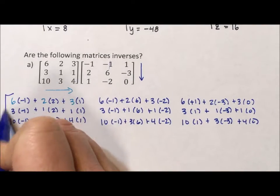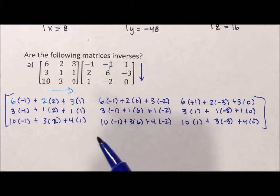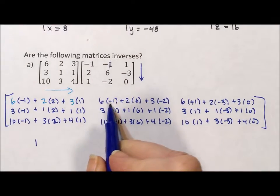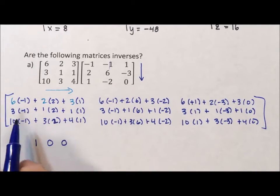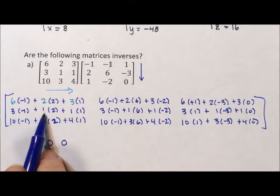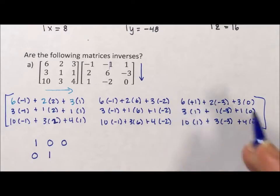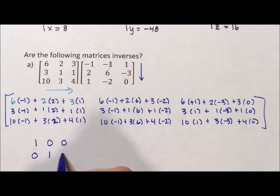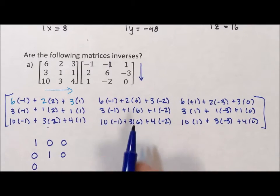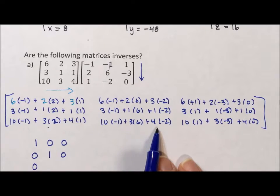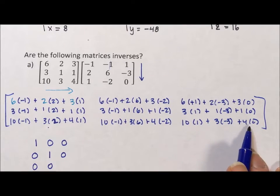Now if I do these calculations, I get 6 plus 4 plus 3, that's 1. Negative 6 plus 12 minus 6 is 0. 6 minus 6 plus 0 is 0. Negative 3 plus 2 plus 1 is 0. Negative 3 plus 6 minus 2 is 1. 3 minus 3 plus 0 is 0. Negative 10 plus 6 plus 4 is 0. Negative 10 plus 18 minus 8 is 0. 10 minus 9 plus 0 is 1.